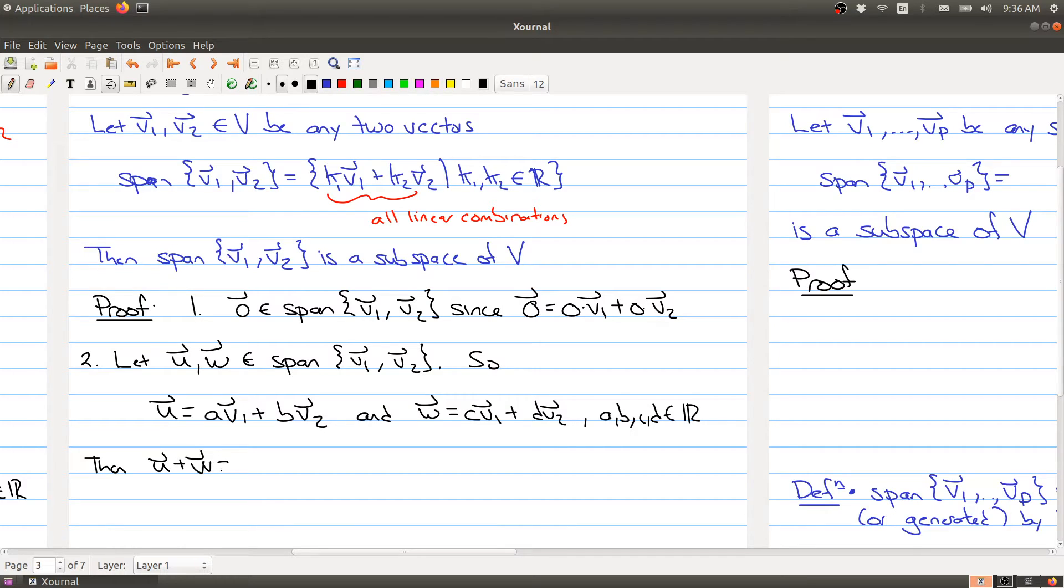U plus W is equal to the sum of these two vectors. And then you can group vectors together. So you would have A plus C times V1 plus B plus D times V2. And what you're getting here is a new linear combination, because A plus C and B plus D are constants.